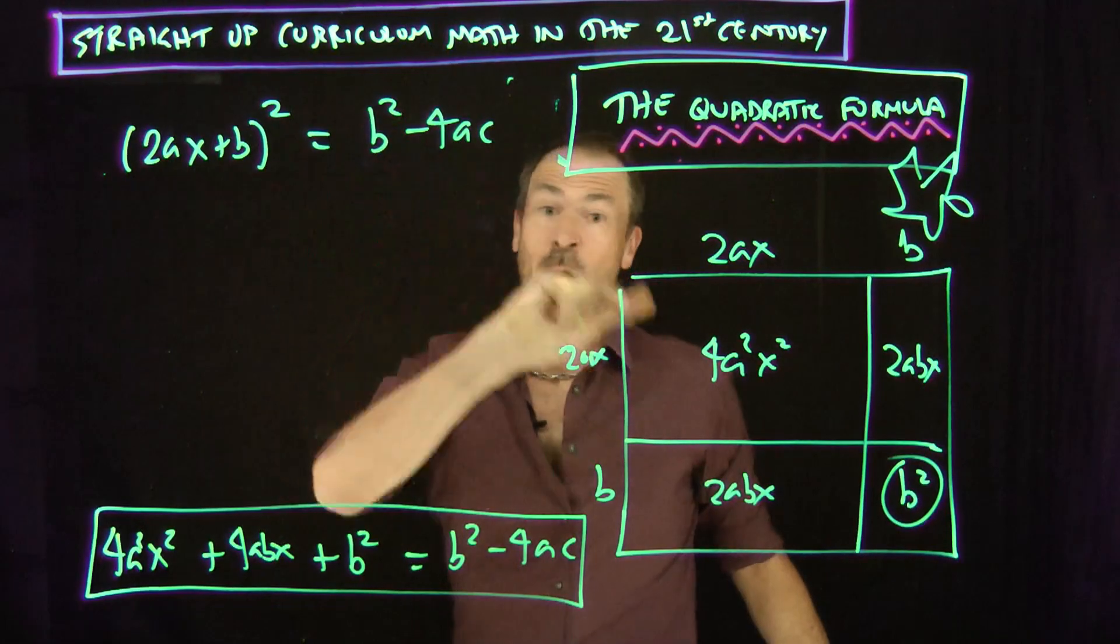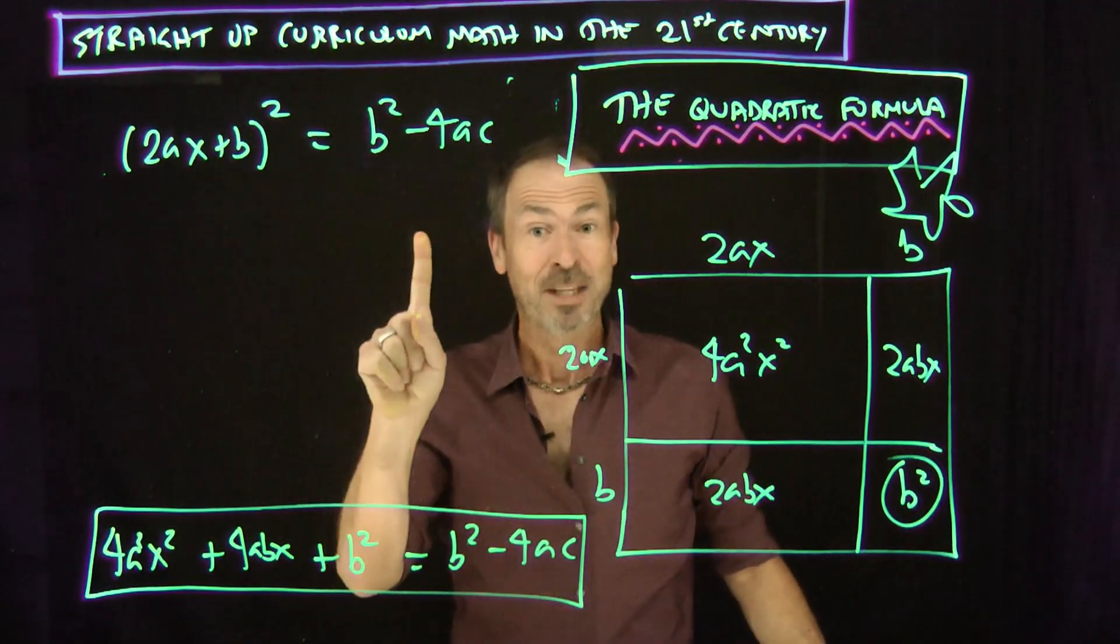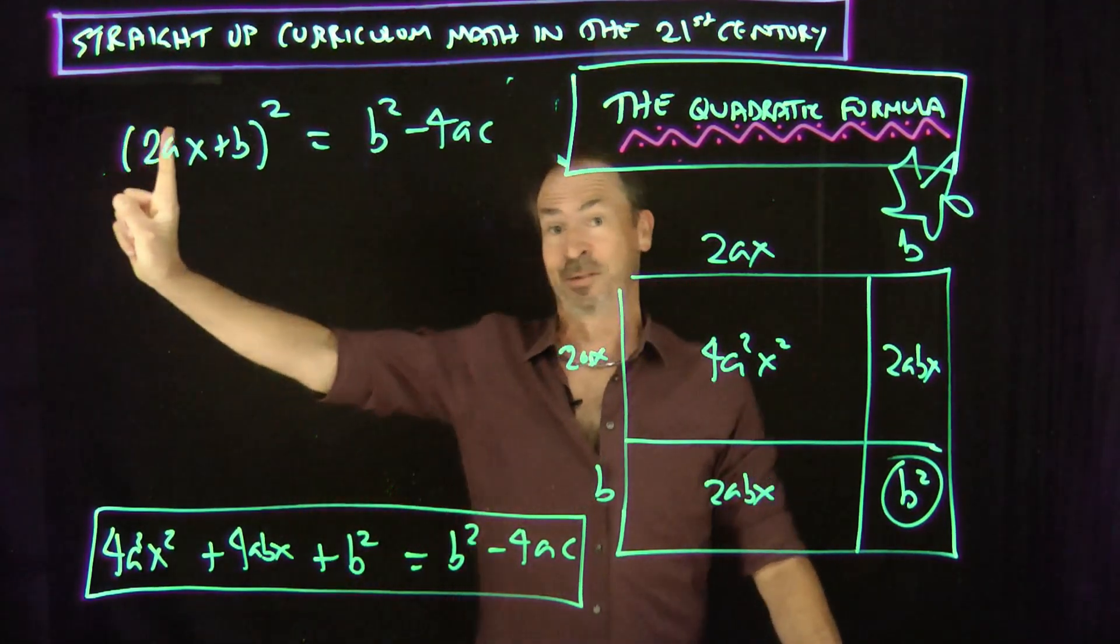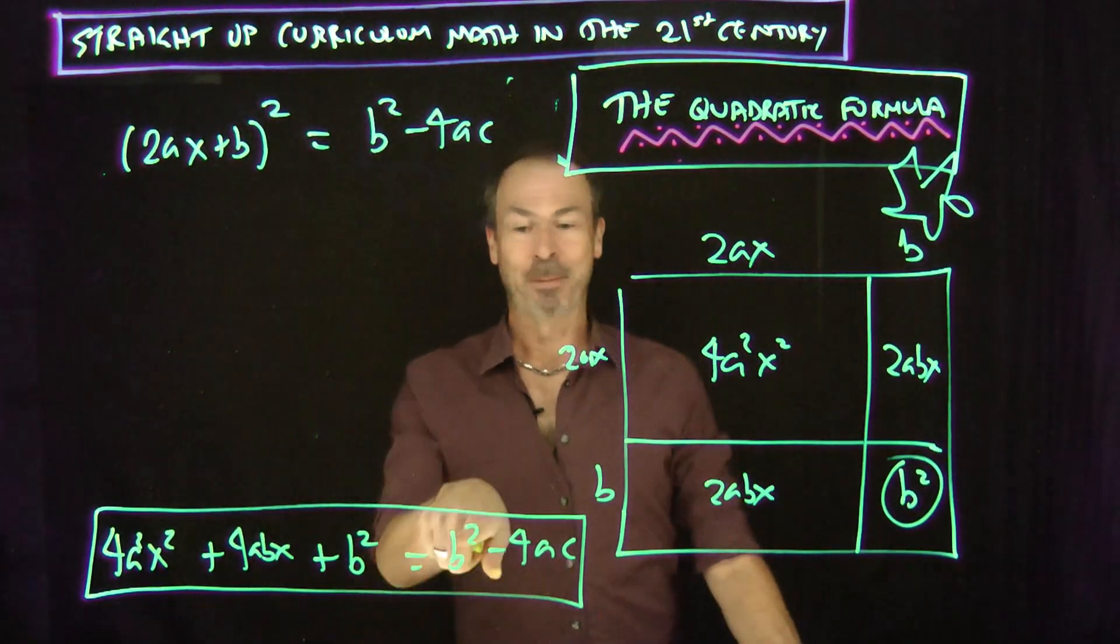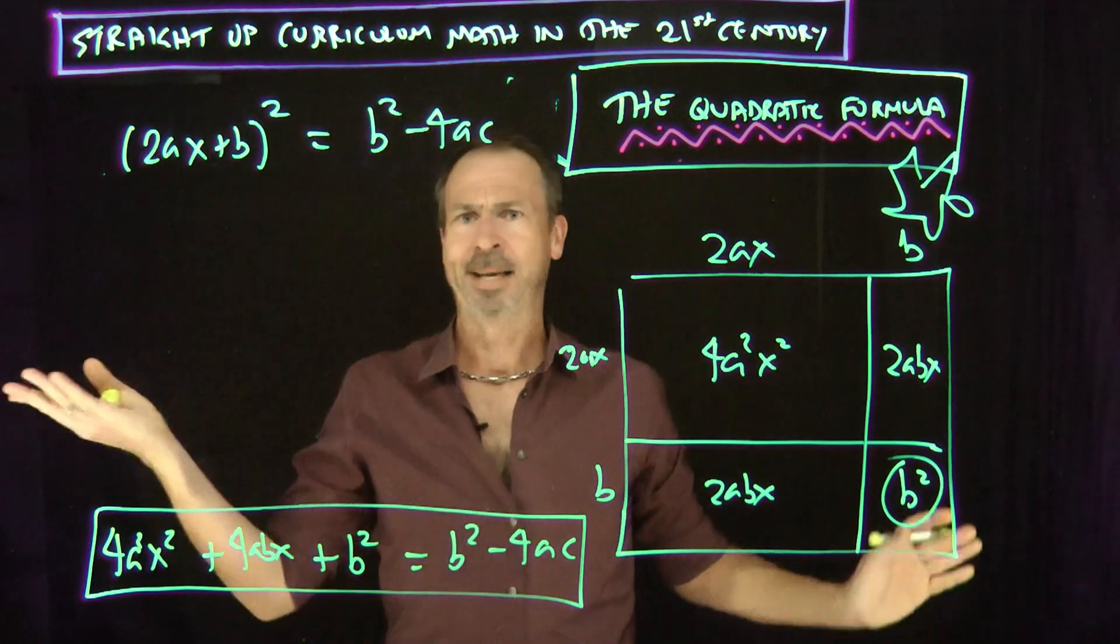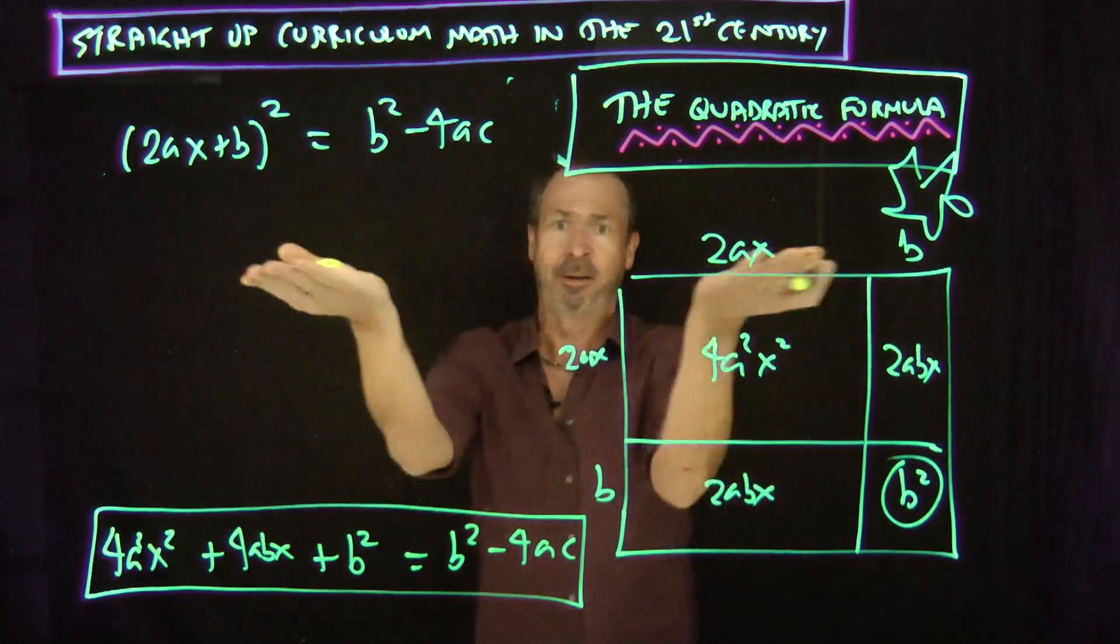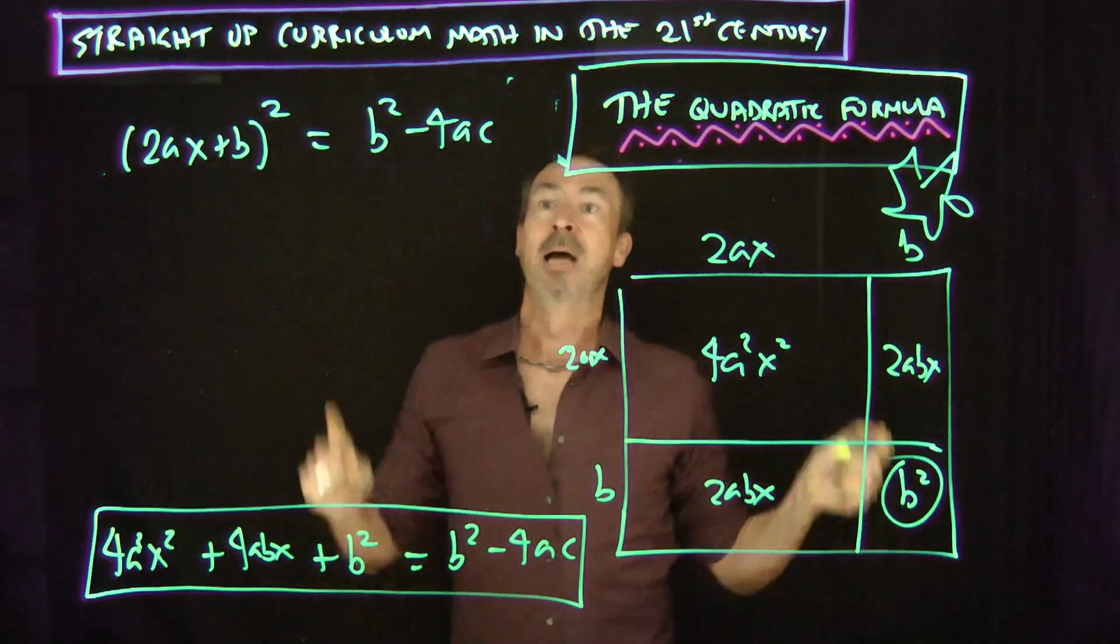If this is a positive number, you'll have two square roots. If this number is zero, you have exactly one square root. Square root of zero is zero and that's the only square root of zero. If this is negative, good luck. There are no real solutions. That's why some people are obsessed with this thing called the discriminant. But you just see it. When you do it, you'll just see you've got either zero, one or two solutions.